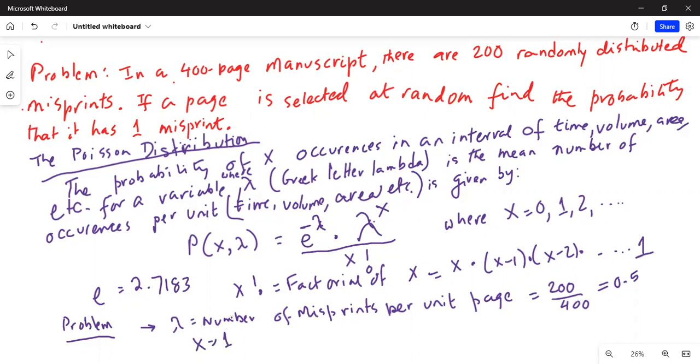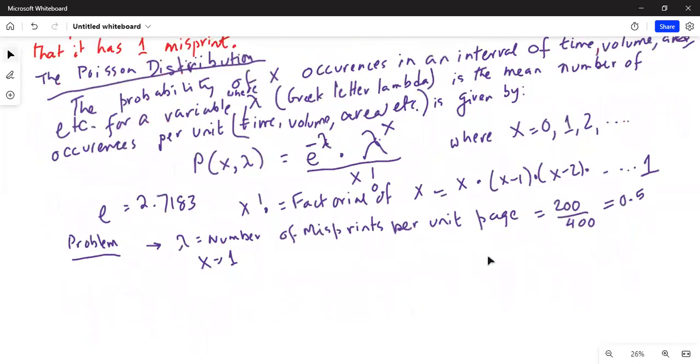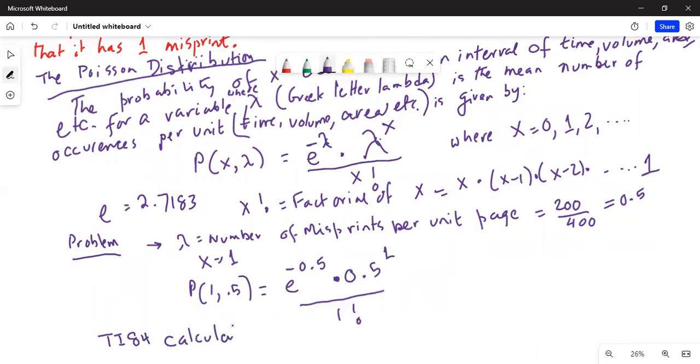Of course, we can use this formula to find out P(1, lambda=0.5) will be equal to E to the power of minus 0.5 multiplied by 0.5 raised to the power of 1 divided by 1 factorial. Now, there's a much easier way of doing it if we have TI-84 calculator. I'll show you that in a minute.